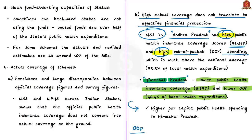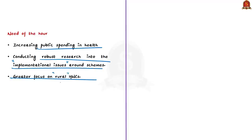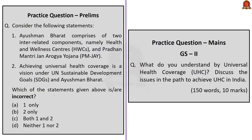Wherever there is good government investment in health, there is a reduction of out-of-pocket expenses and a reduction of burden on people below the poverty line. The need of the hour is to increase public spending in health, to conduct robust research into implementational issues around these schemes, and to have a greater focus on rural health and wellness centers. In this article we saw the meaning of universal health coverage, WHO's factors for achieving it, India's status, the Ayushman Bharat flagship scheme, and various issues in the way of achieving universal health coverage.